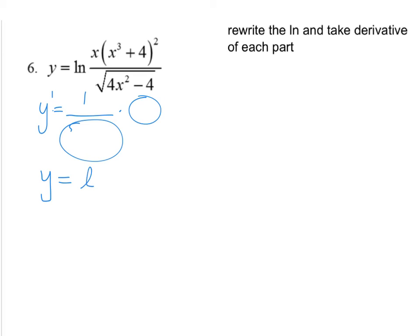I have the natural log of x. This is on the top. So it's plus. The exponent is 2. Natural log of x to the third plus 4. And then I have the bottom. So that's minus. And then it's 1 half because it's all of it to the 1 half power. The natural log of 4x squared minus 4.